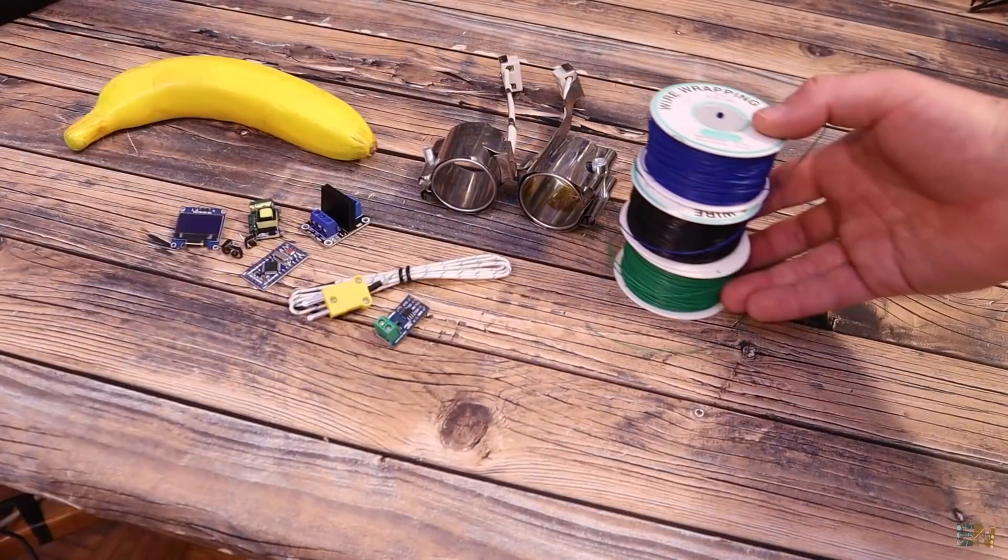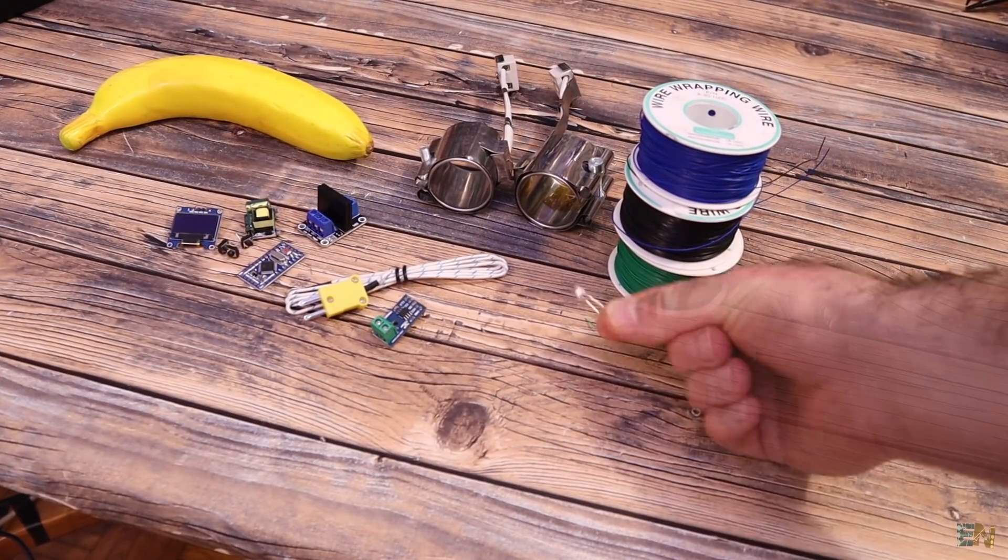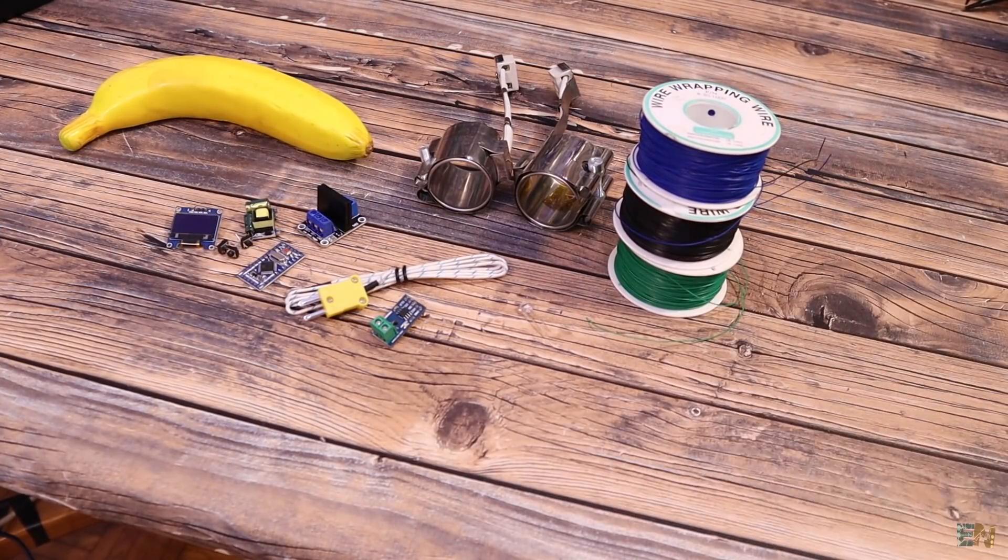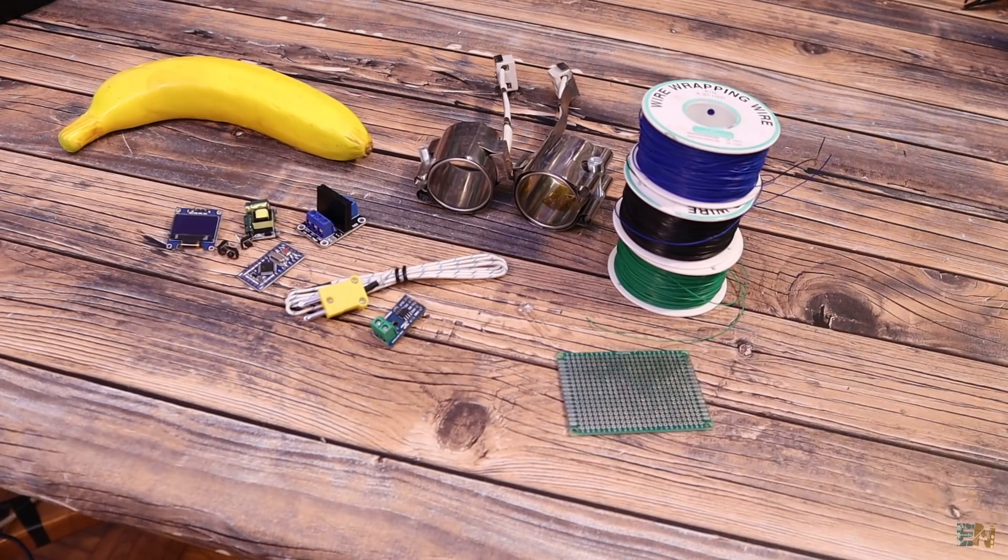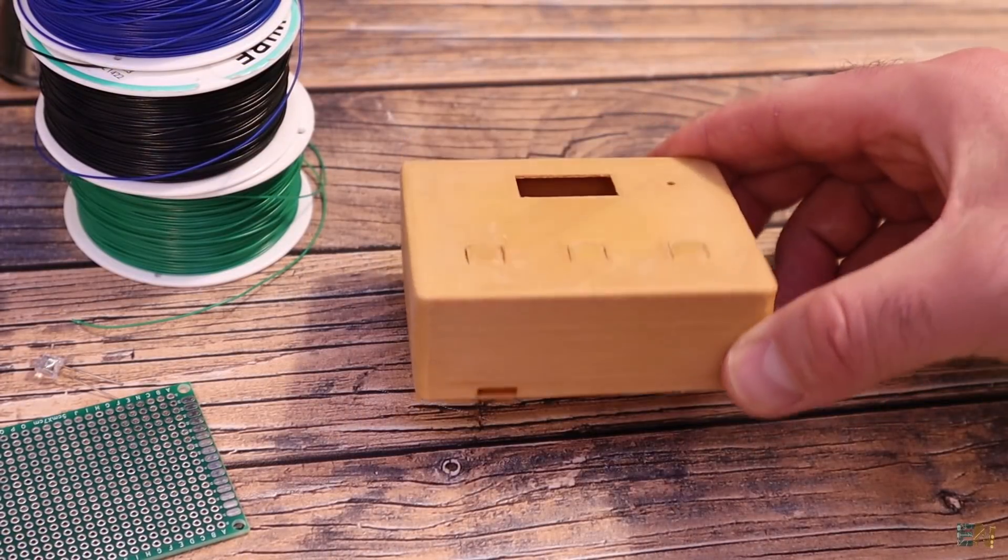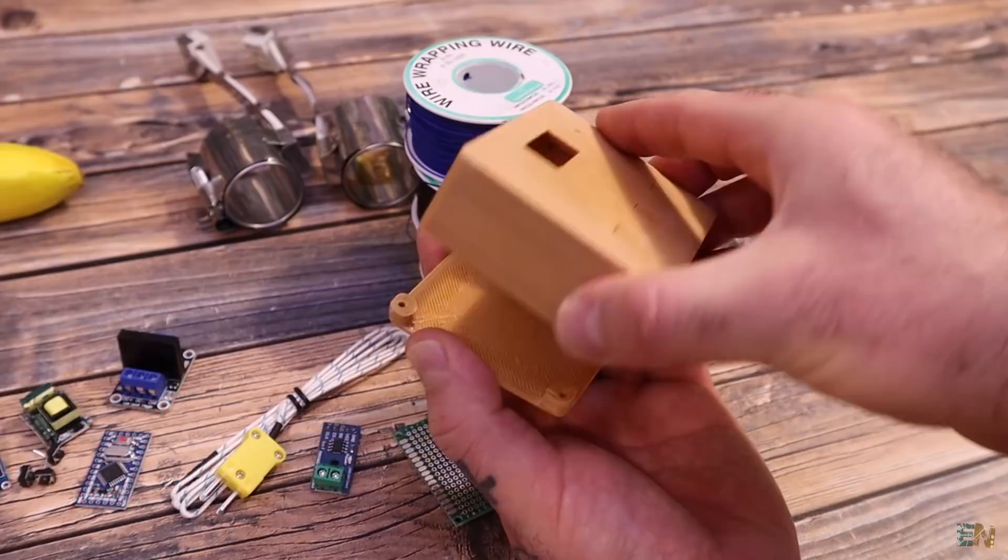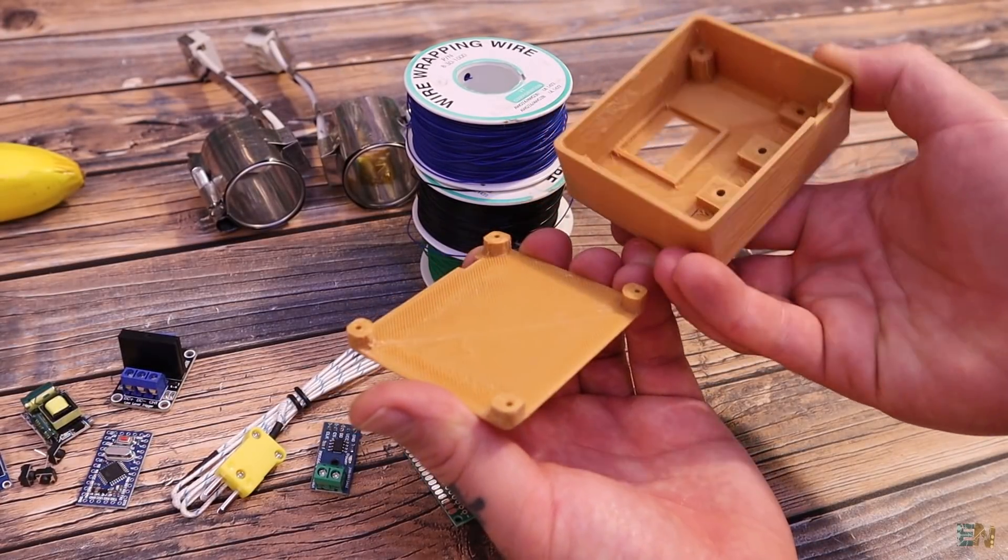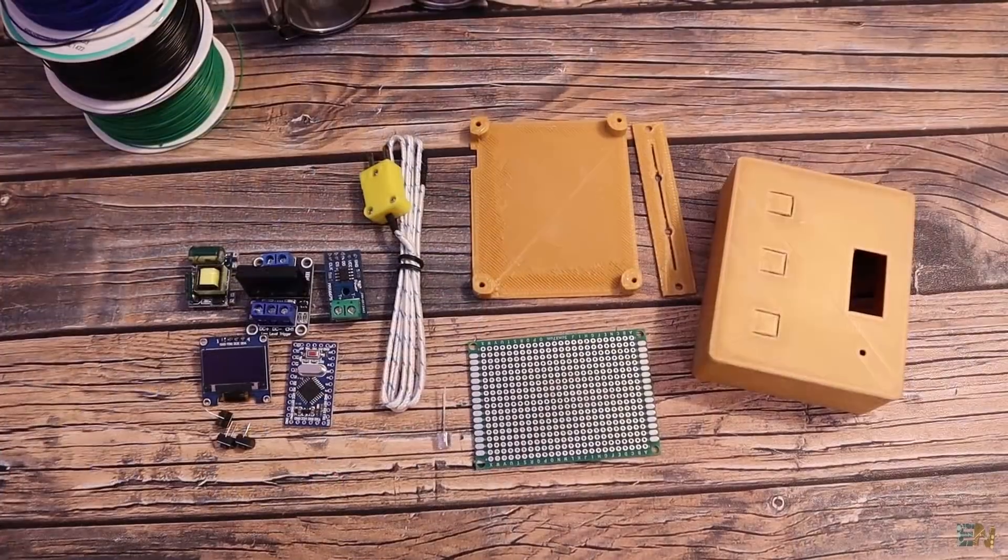Extra components you should have are some wires, maybe an LED, some prototyping PCBs to solder everything and a case. You could make this case yourself or maybe just download my design from below and print it. Okay, so let's mount this controller and then I will explain you the code.